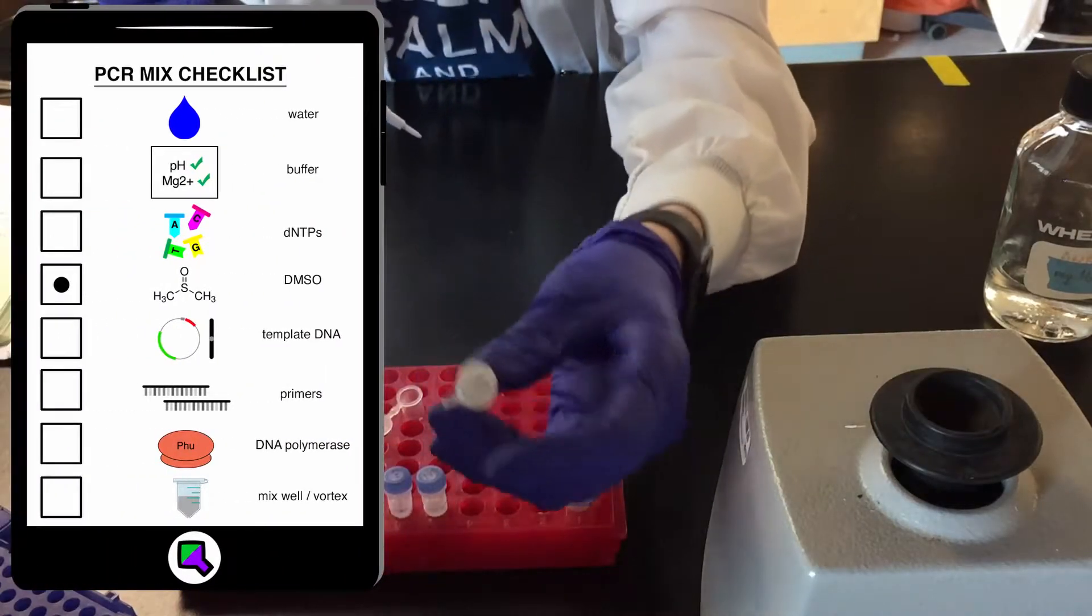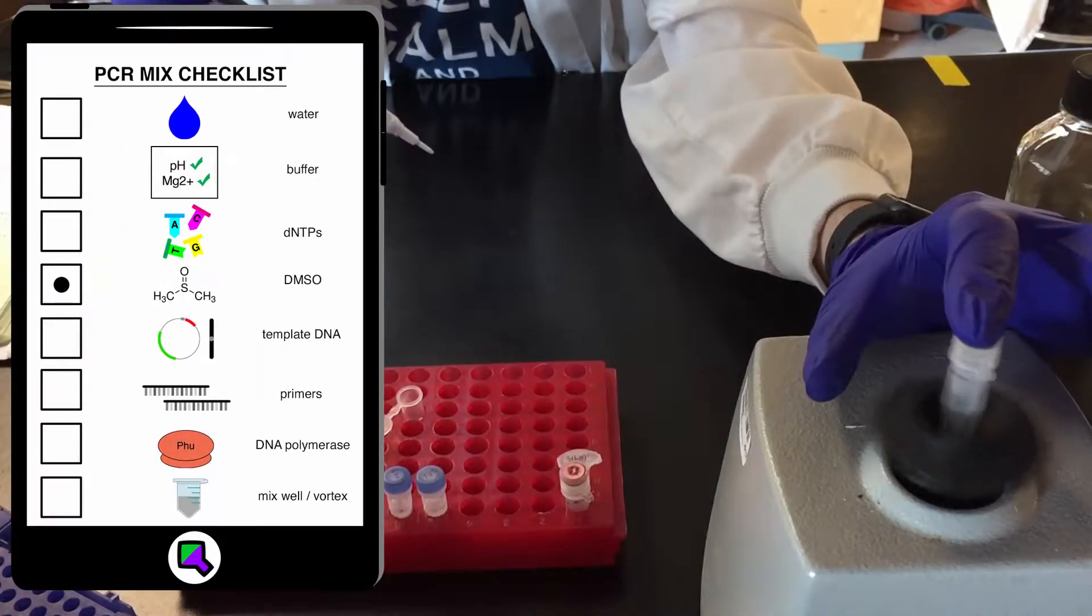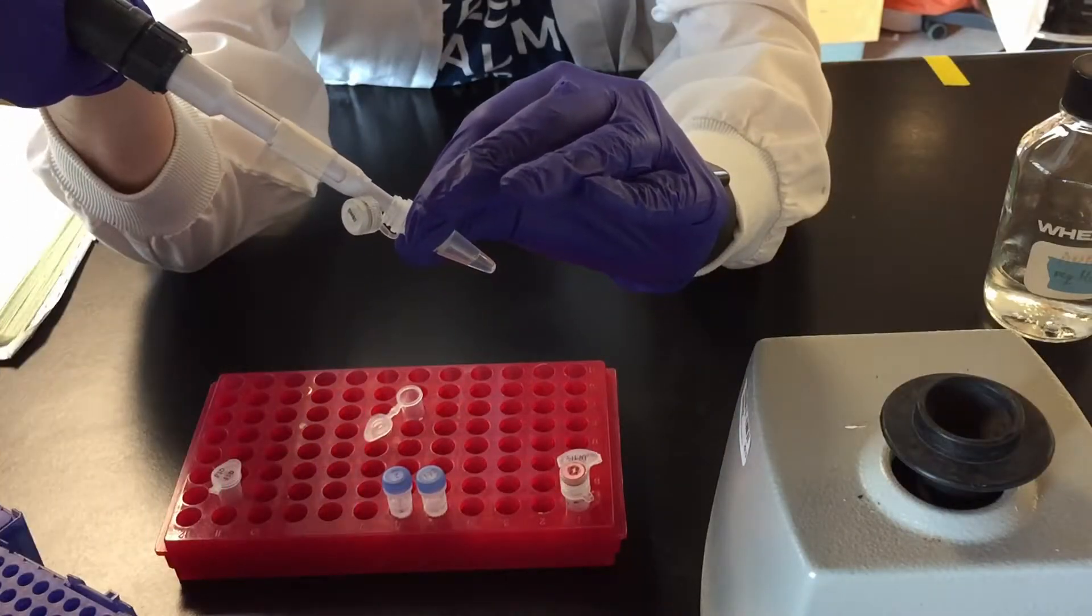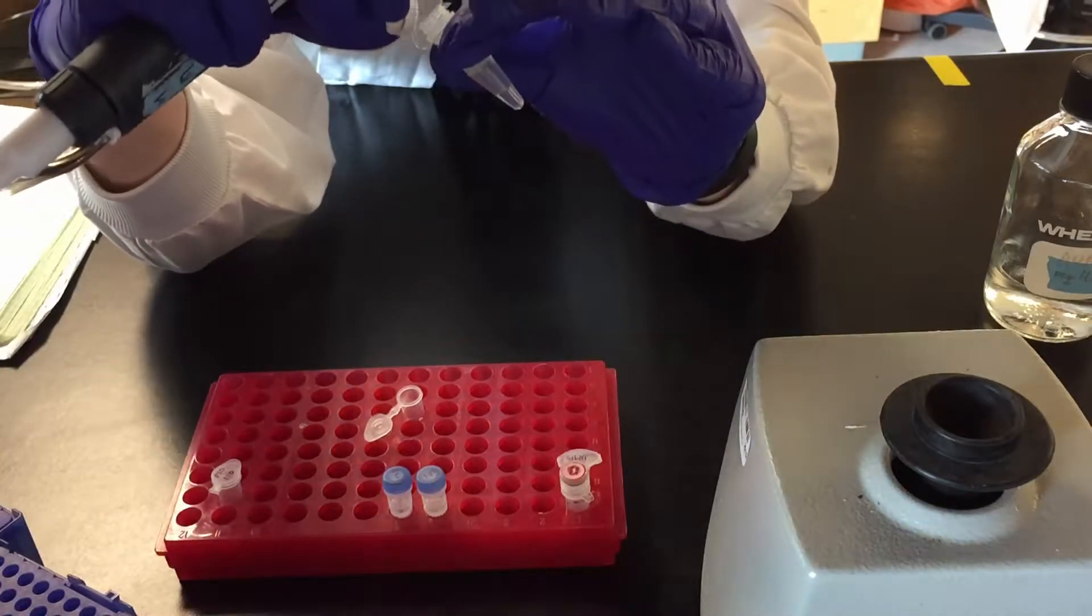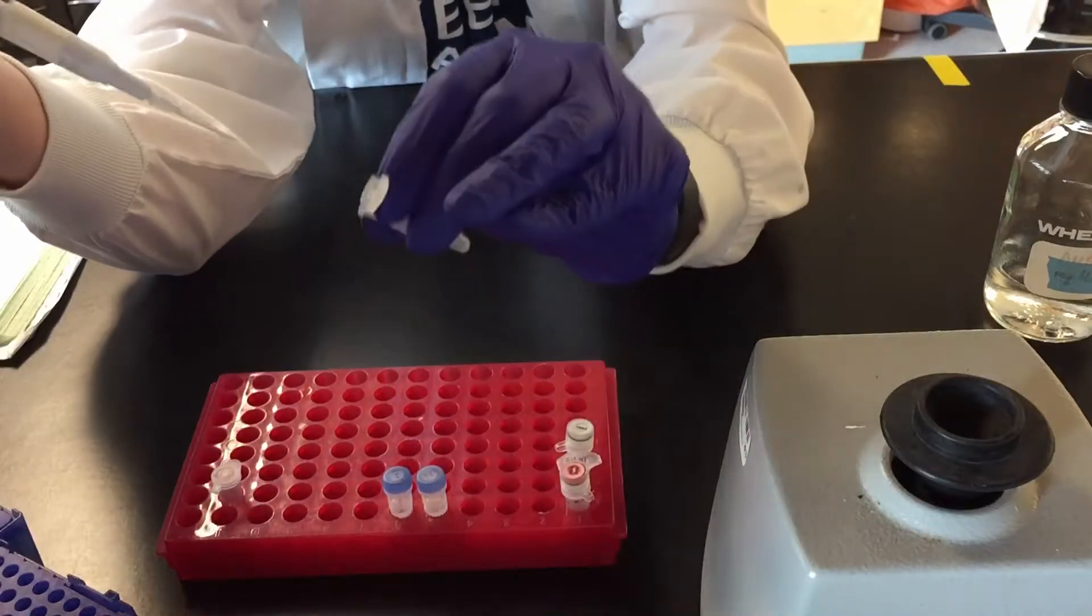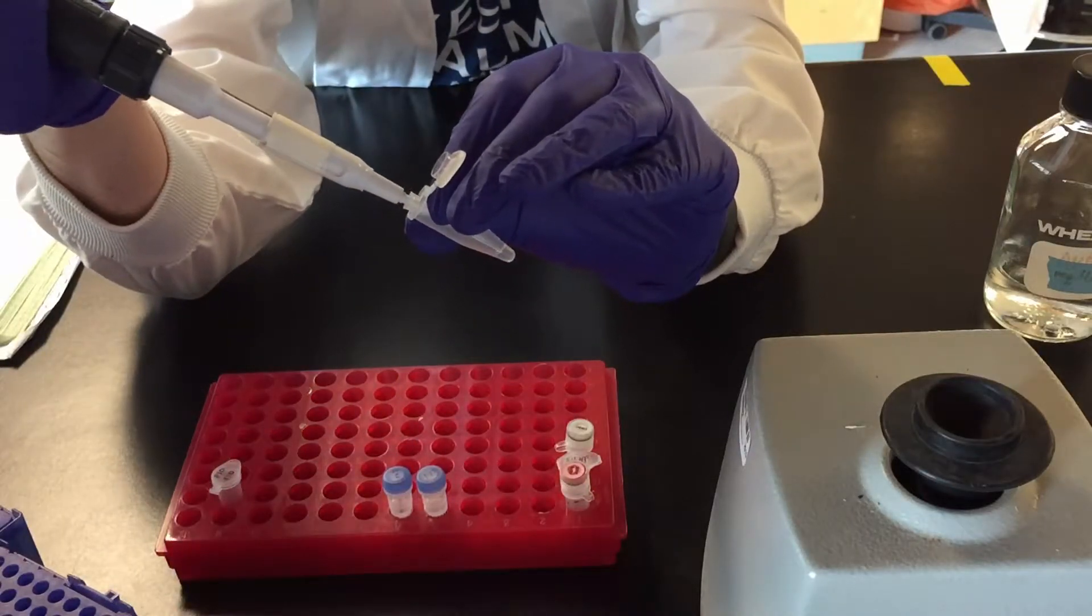Some PCR reactions include DMSO which helps reduce secondary DNA structures by binding cytosine residues. Primers are usually GC rich so this helps them anneal to the template.